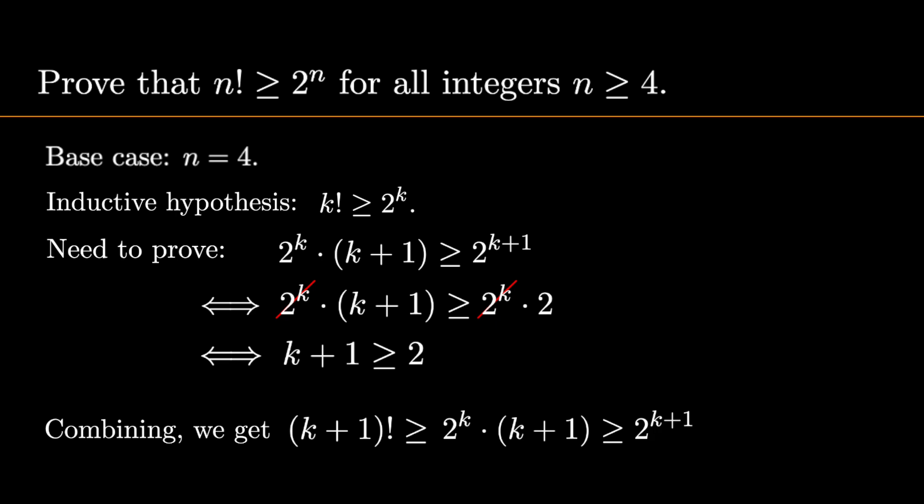And from this, we conclude the result we're after. k plus 1 factorial is greater than or equal to 2 to the k plus 1.